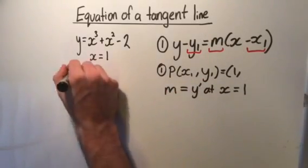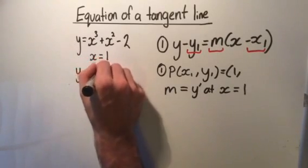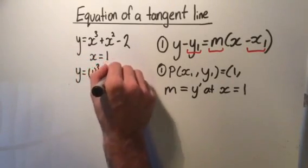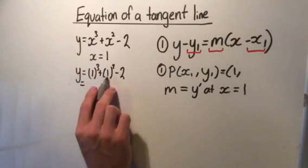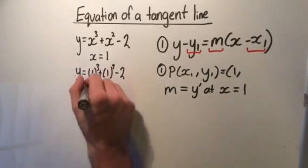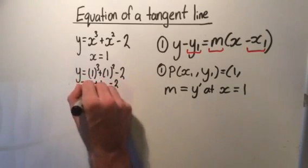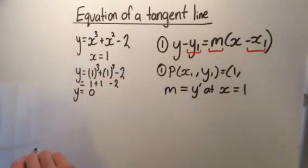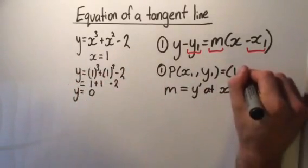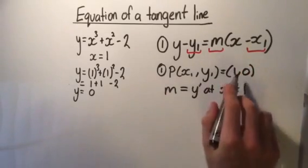Okay. So what we do is we just go y equals 1 cubed plus 1 squared minus 2. And we know that that is going to equal 1 plus 1 minus 2, which equals 0. So here we get y equals 0 and x equals 1. So we know that our point here is 1 and 0. Great. So that's our point.